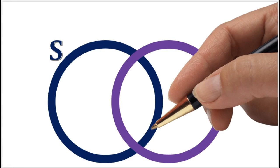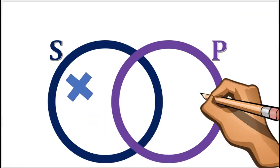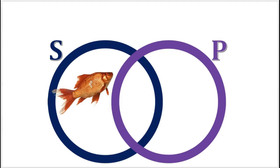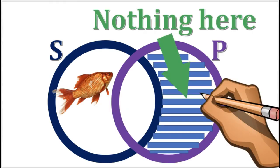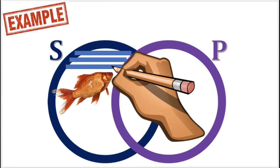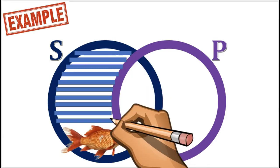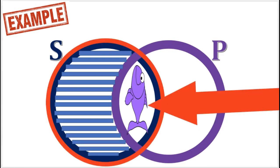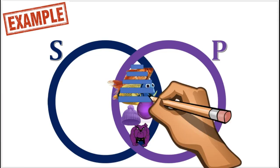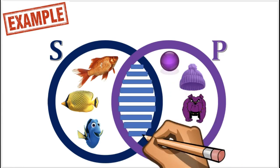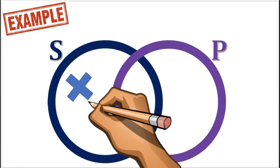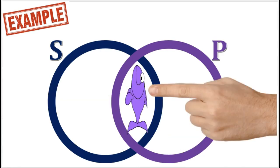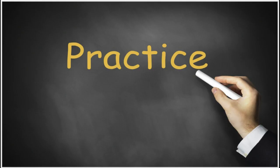Now, when drawing a Venn diagram, you can draw an X in an area, or you can shade an area. If you put an X in an area, it means that something exists in that area. When you shade an area, it means that the area is empty. For example, shading the left-hand part of the fish circle empties that area and pushes all the fish into the overlap area. Notice that the fish must remain somewhere in the fish circle. Shading the other area pushes the fish to the left and purple things to the right. Placing an X in the left-hand part of the fish circle means at least one thing exists there. Placing the X in the overlap area means at least one thing exists there.